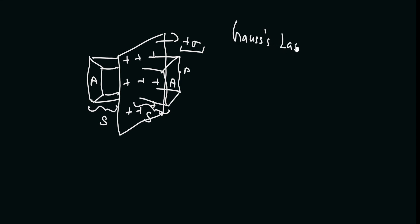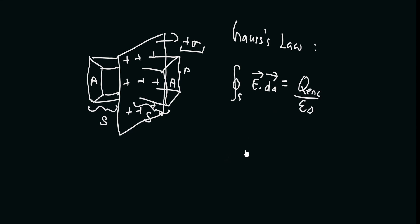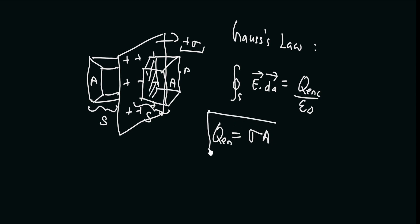Now let us first write down Gauss's law: the closed surface integral of electric field dot dA equals the charge enclosed divided by epsilon naught. The charge enclosed will be equal to the surface charge density times the area enclosed by the Gaussian surface, which is A. So the charge enclosed equals sigma times A.